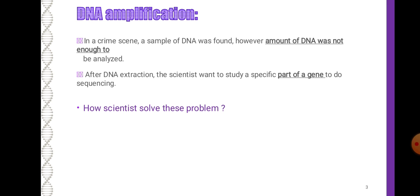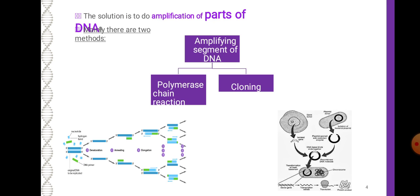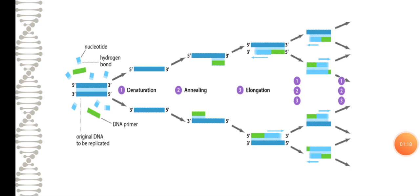Consider a crime scene where a sample of DNA was found but the amount was not enough to be analyzed. After DNA extraction, scientists want to study a specific part of a gene for sequencing. The solution is to do amplification of parts of DNA. Amplifying a segment of DNA can be divided into two types: Polymerase Chain Reaction and Cloning.